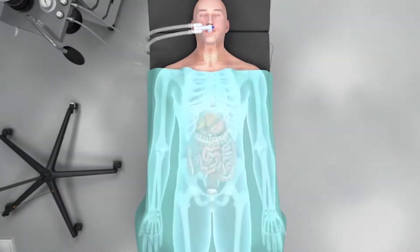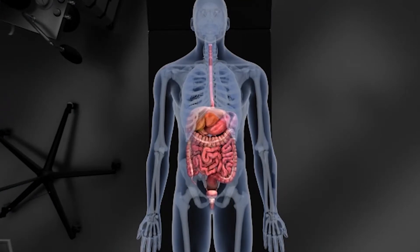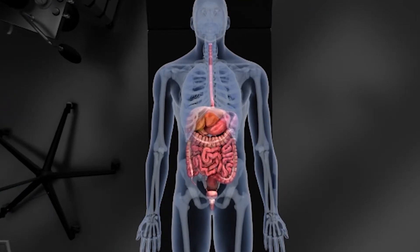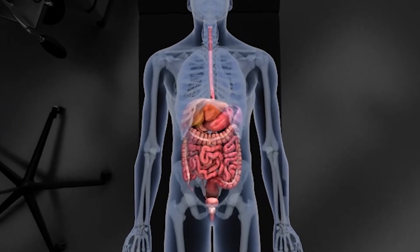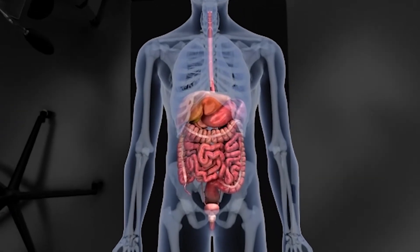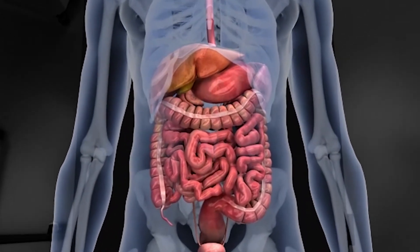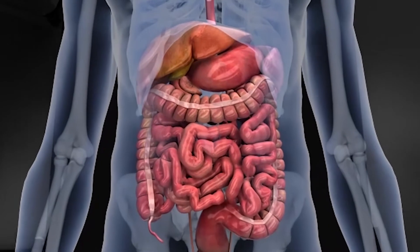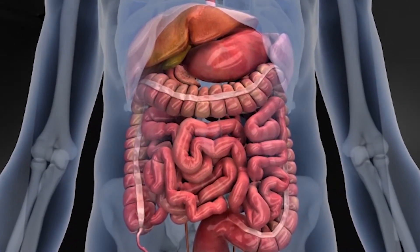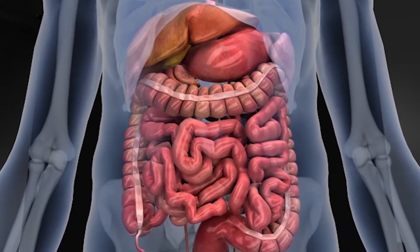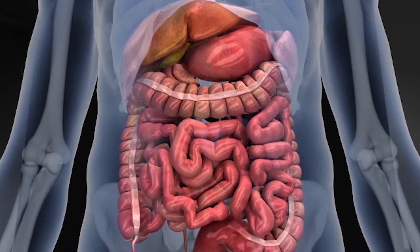Multiple organ systems are affected by the adequacy of volume administration. The gastrointestinal tract, for example, is greatly affected by excessive or insufficient volume administration. When properly hydrated, gastrointestinal tissues are well perfused and receive adequate oxygen delivery, ensuring good bowel function.